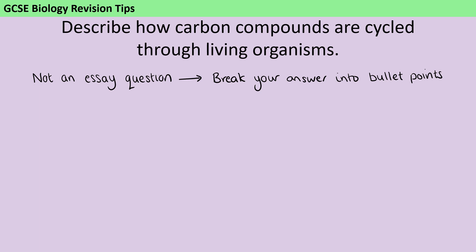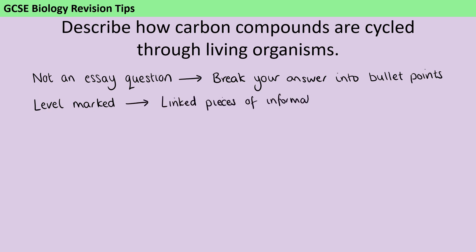Bear in mind that this type of question is usually level marked, and that means that you don't get six marks for six true things. Instead, you have to hit certain criteria, which here is likely to be linked ideas. So you don't just want a scattergun approach where you write down everything you know about the carbon cycle. Instead, you want your answer split up into sections where you include a key process and then all the information you want to say about that process.